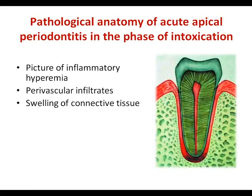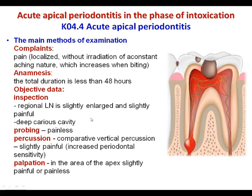Acute periodontitis has two phases. The first is the phase of intoxication. Its pathological anatomy shows a picture of inflammatory hyperemia, perivascular infiltrates, and swelling of connective tissue. Clinical examination involves both main methods — complaints, anamnesis, and objective data including inspection, probing, percussion, and palpation — as well as additional methods.